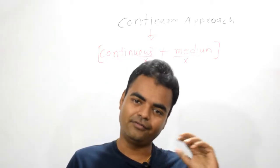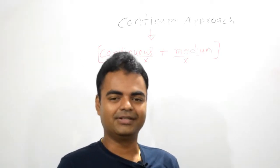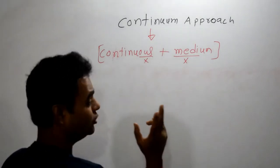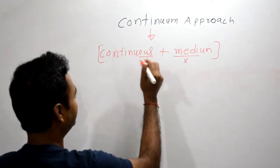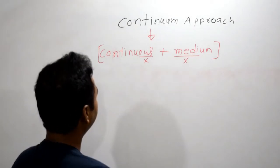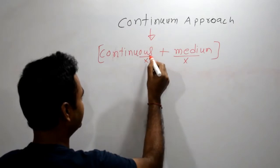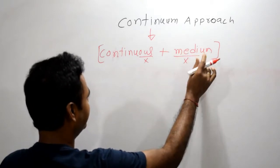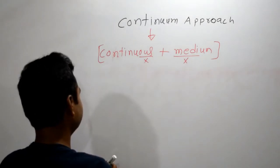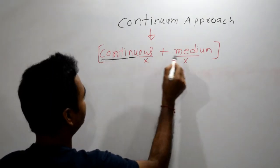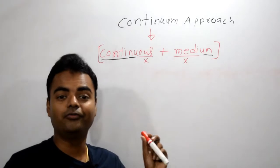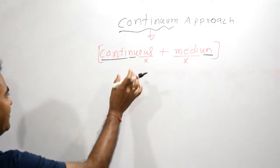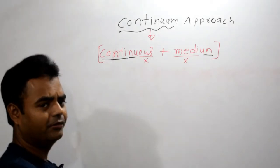Now how did we get this word 'continuum'? We got this word from two words: one is 'continuous' and another one is 'medium.' From 'continuous' we drop the 'ous,' and from 'medium' we drop the 'medi,' and you can see: conti + nuum gives us 'continuum.' That is how we got this word.